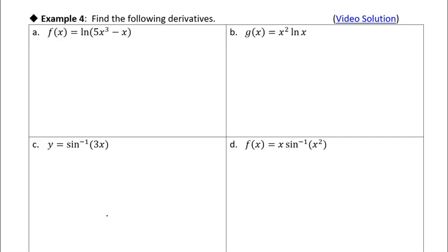So here we have natural log of 5x cubed minus x. We have natural log on the outside, and 5x cubed minus x on the inside, so we need to use the chain rule. So we're gonna write f prime of x, and I need to take the derivative of the outside function — natural log — and we said that derivative was one over x, but we're going to leave the inside function as it is.